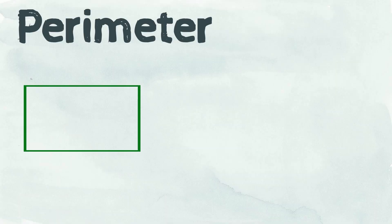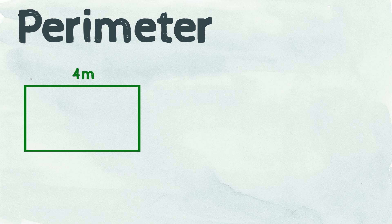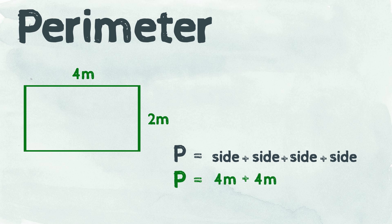Let's calculate the perimeter of this rectangle. Its length is 4 meters and its width is 2 meters. The formula for working out the perimeter of a rectangle is often shown as perimeter equals side plus side plus side plus side. The perimeter of this rectangle is 12 meters.